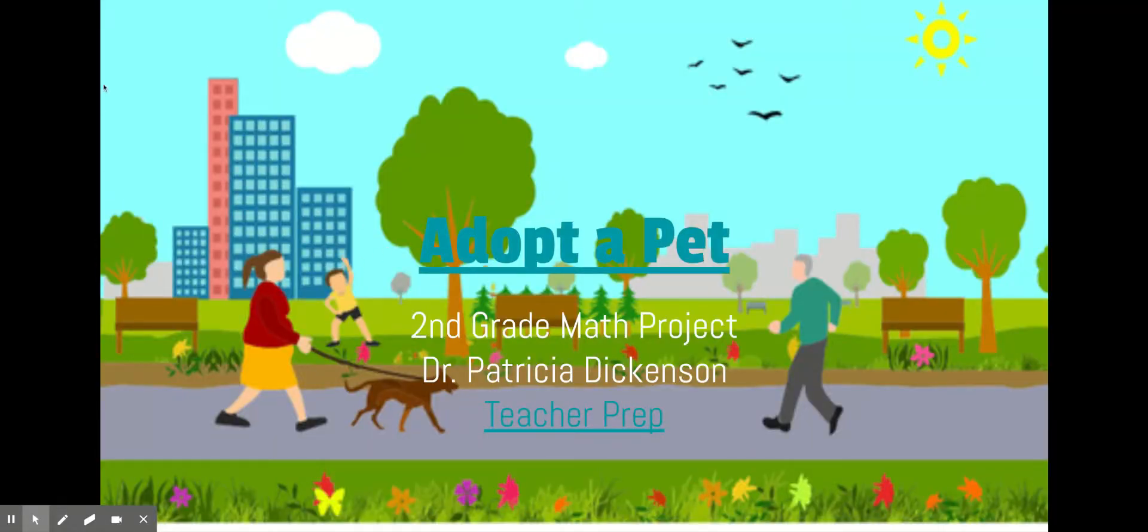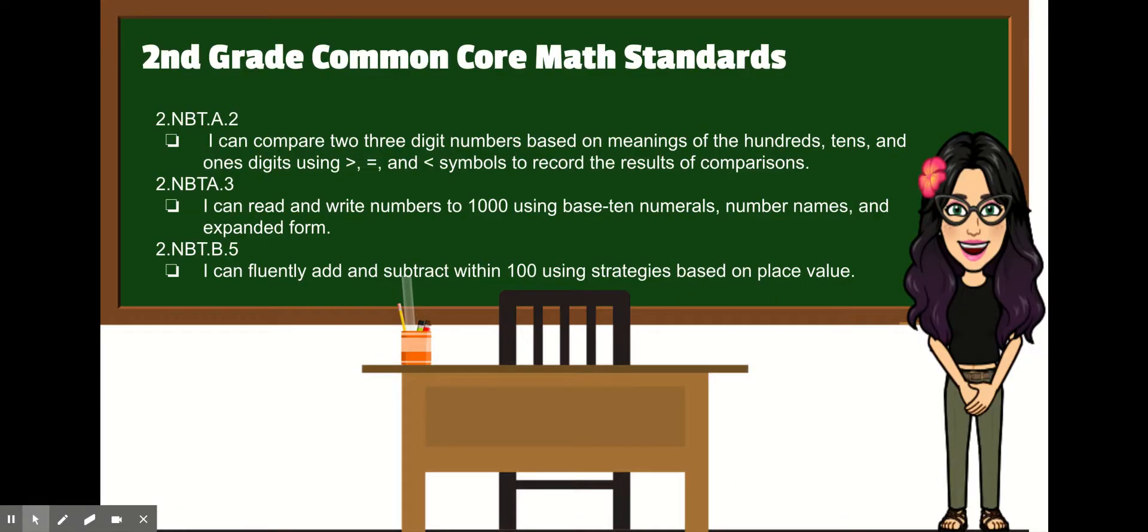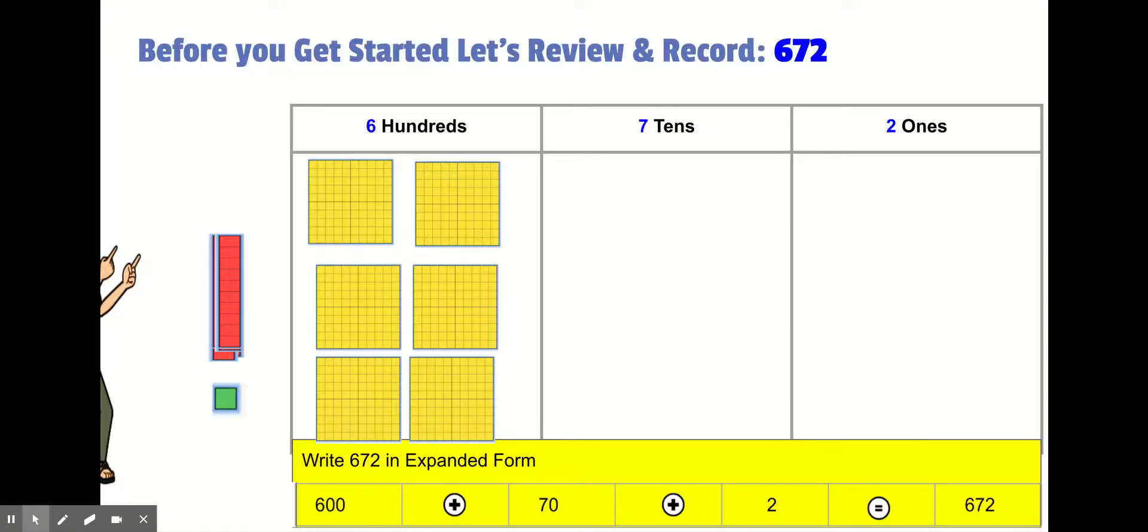Here's an example of a problem-based learning activity that I actually created for my daughter who is in second grade. It's called Adopt-a-Pet because she loves the Roblox game Adopt-me. There's a lot of fun activities. Students are going to work on the second grade common core math standards about comparing two and three digit numbers and they're going to fluently add and subtract within a hundred. As you can see in this slide, there are images of base ten blocks. You have your hundreds and your tens and your ones and students are going to build the number. That's going to help with their conceptual understanding.